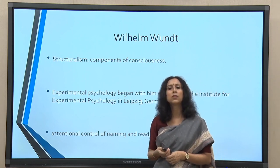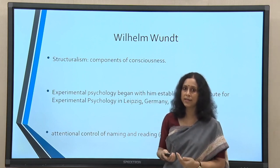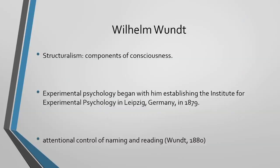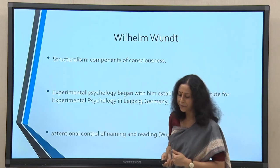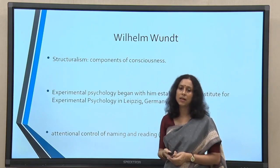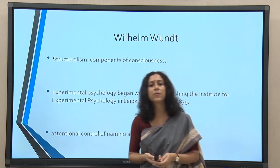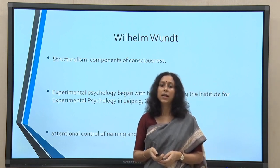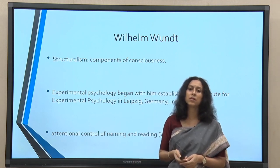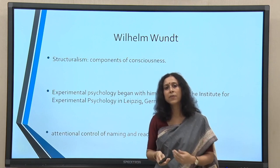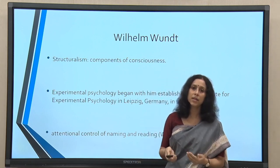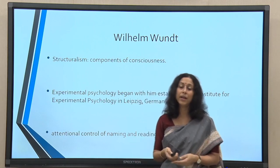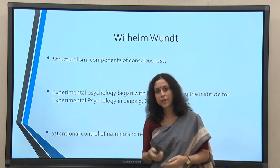When Wundt talked about consciousness — to be more precise — he talked about what the parts and components of consciousness are. Experimental psychology is understood to begin with him when he established the Institute for Experimental Psychology in Leipzig, Germany in the year 1879. Wundt was one of the most prolific researchers of his time — he wrote close to 500 papers, guided close to 200 students, many of whom went on to become towering figures within psychology.